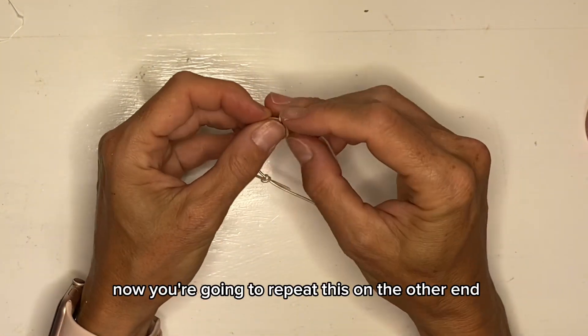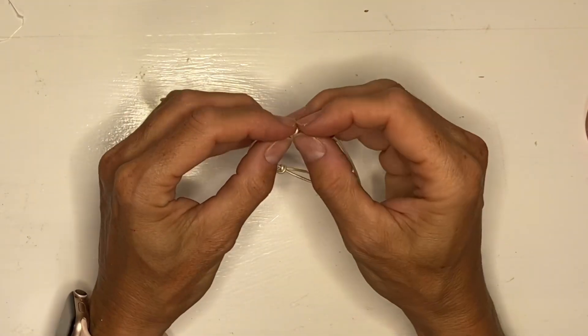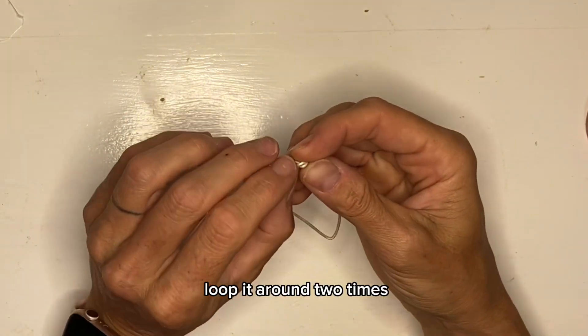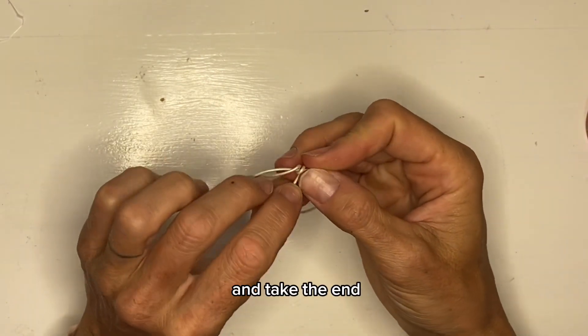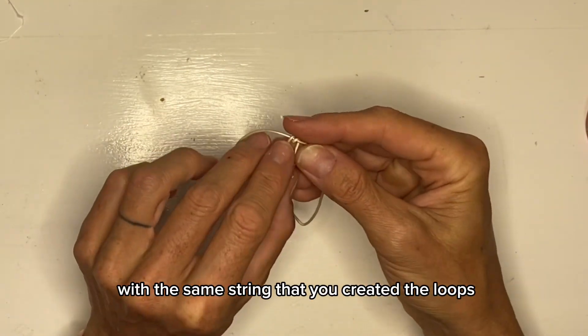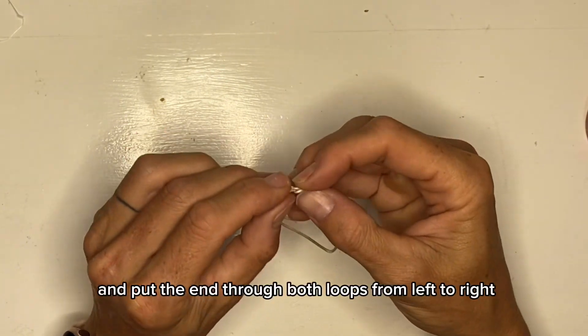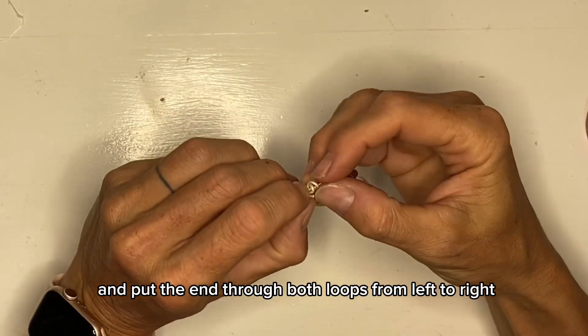Now you're going to repeat this on the other end. Loop it around two times and take the end with the same string that you created the loops and put the end through both loops from left to right.